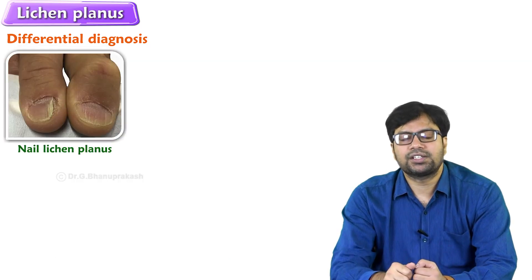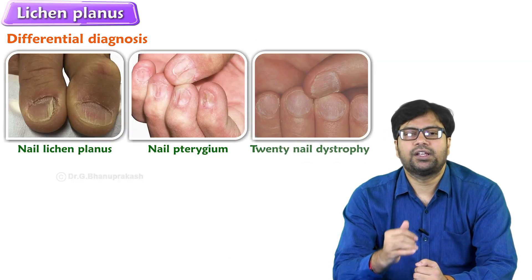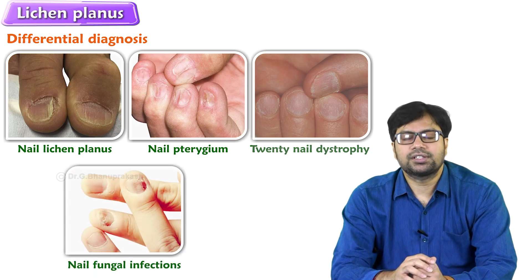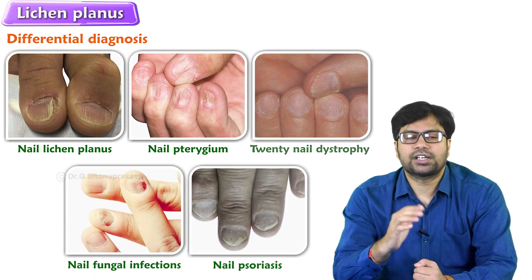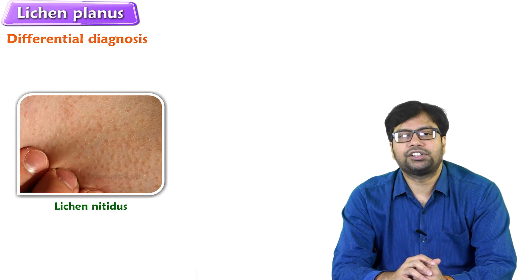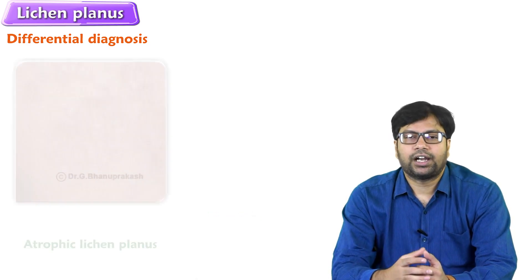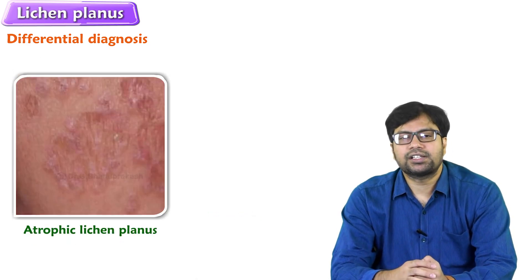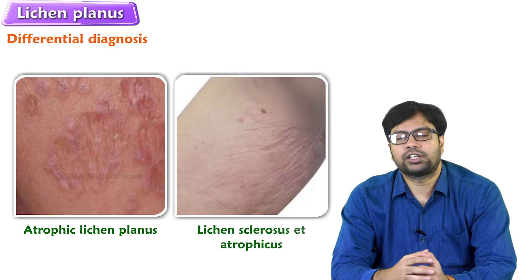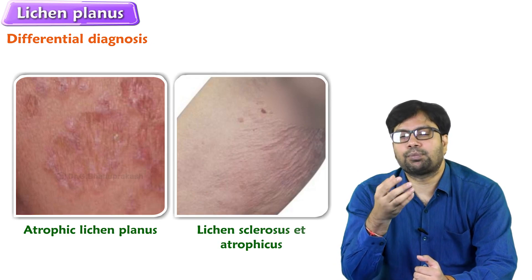Nail lichen planus with pterygium and nail dystrophy should be differentiated from nail fungal infections and nail psoriasis. Lichen nitides needs to be differentiated from keratosis pilaris as well. Atrophic lichen planus needs to be differentiated from lichen sclerosus et atrophicus. These are the differential diagnoses for each type of lichen planus.